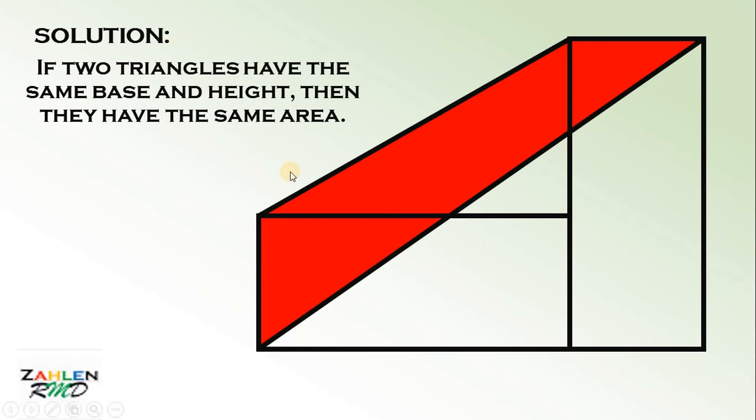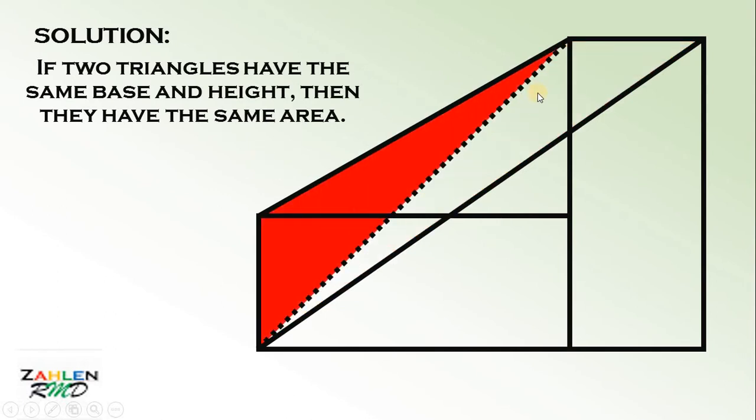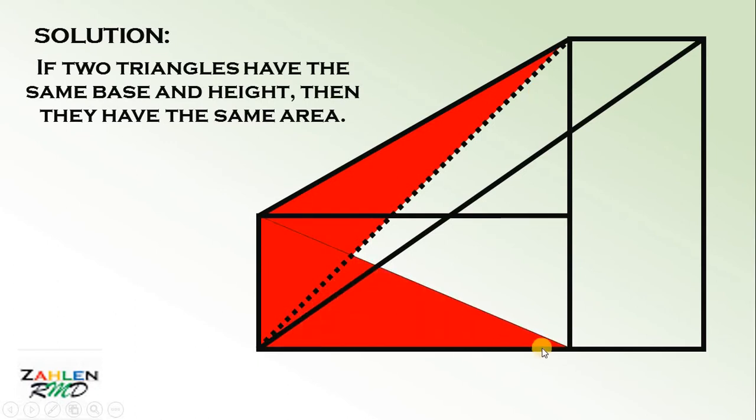To use this concept, we need to create this line. So this line separates this red region into two triangles. Now let's focus on this triangle. Notice that it is equal to this right triangle. The reason is, they have the same base and they have the same height. Therefore, they have the same area.